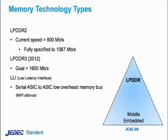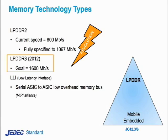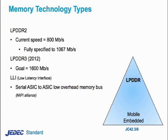The standard defines LPDDR2 operation up to 1067 megabits per second. There is currently in development an LPDDR3 specification with a goal of reaching 1600 megabits per second, probably available sometime late next year. One new type of memory interface not being defined in JEDEC is called LLI, which stands for Low Latency Interface. It's being driven by an organization called MIPI, responsible for many mobile device interface standards. LLI will be one of the first true high-speed serial interfaces designed to communicate memory traffic from one ASIC to another.